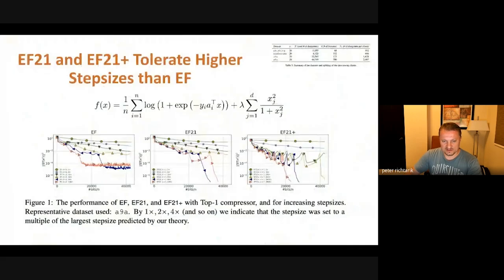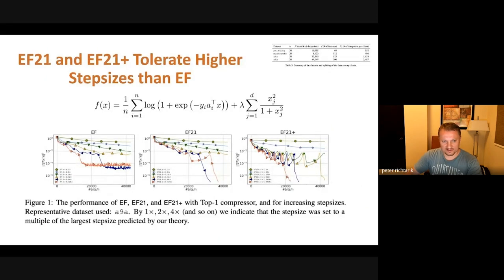In our experiments, error feedback 21 works better than error feedback in the sense that it admits larger step sizes. We also have a heuristic version called EF21+, which is even more aggressive and works even better, but is subject to some oscillations.